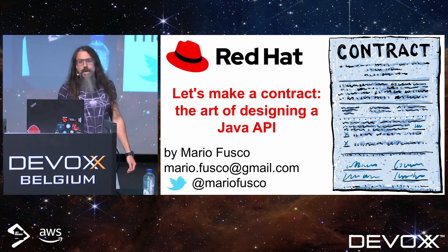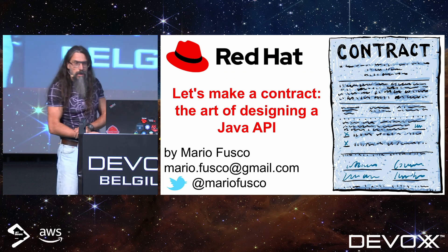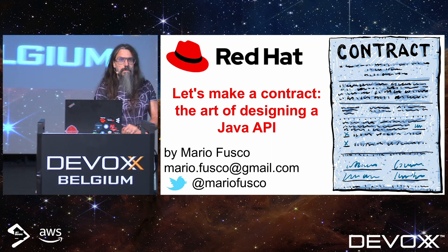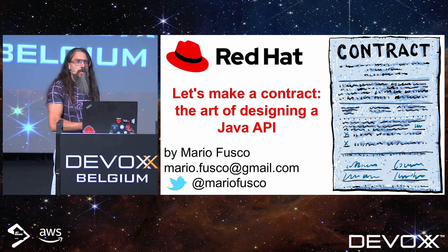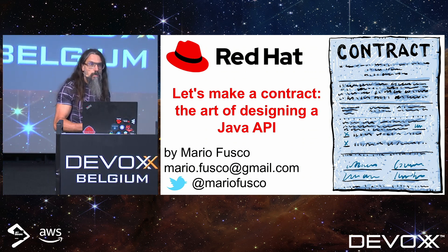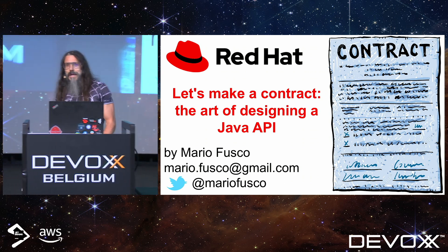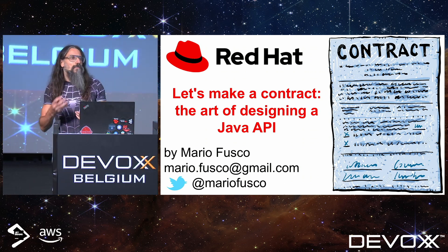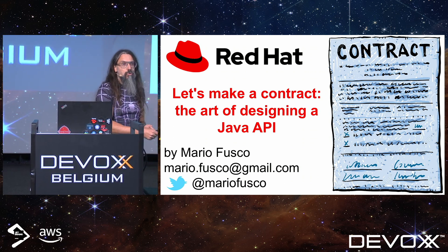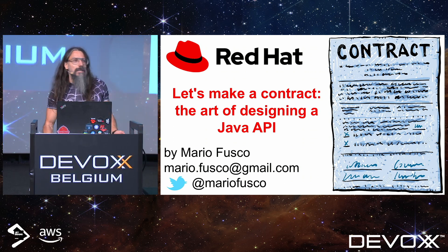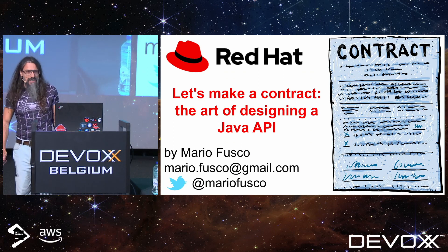Hi all, thank you for coming. My name is Mario Fusco, and today I was supposed to speak about how to design a Java API. But if you were at Venkat's Deep Dive yesterday morning, he spoiled the second part of this talk, and during the keynote he spoiled the first part. They also started speaking about Project Loom, which is the topic of my second talk tomorrow. But anyway, let's do this the same.